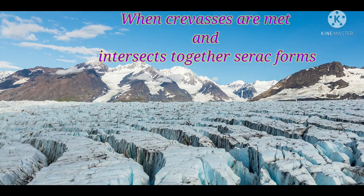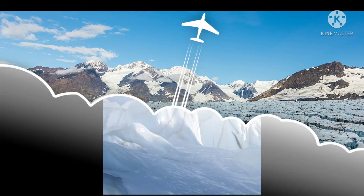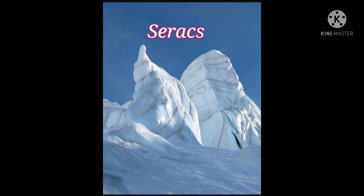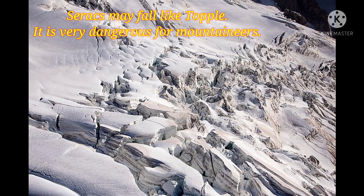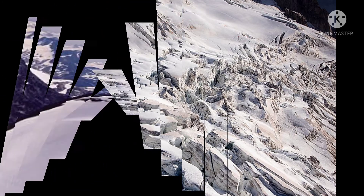When crevasses intersect together, some blocks or pillars of glacier ice appear. These blocks or pillars of glacial ice are called seracs. They may form within an icefall and may topple and fall, making them very dangerous for climbers or mountaineers.